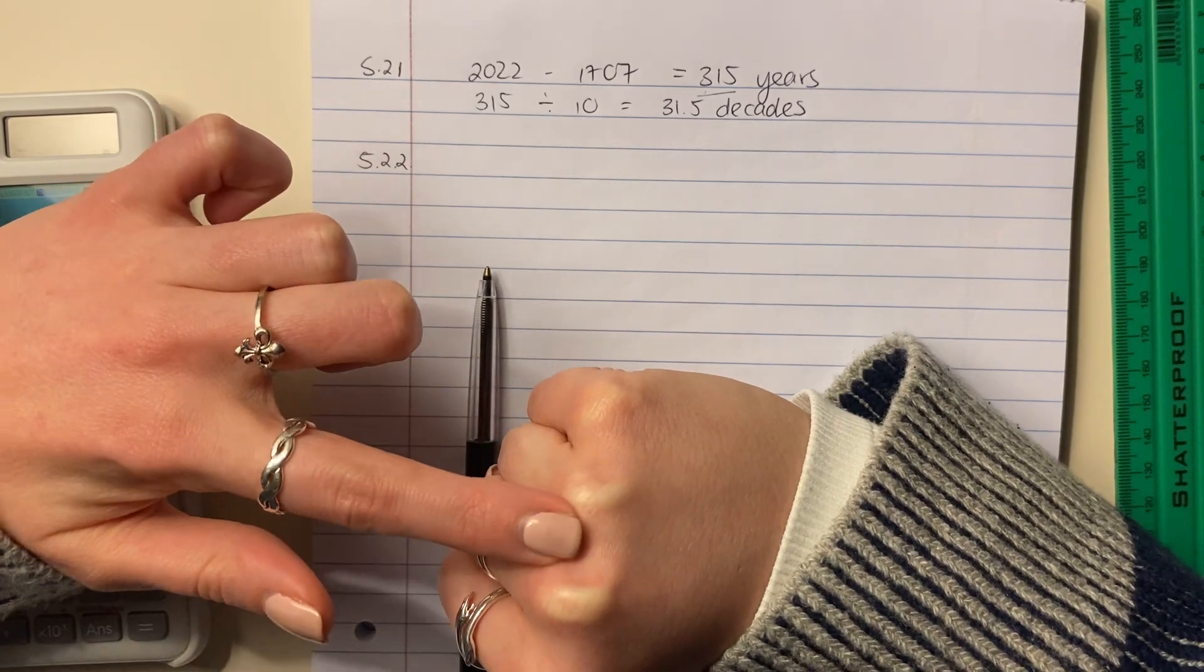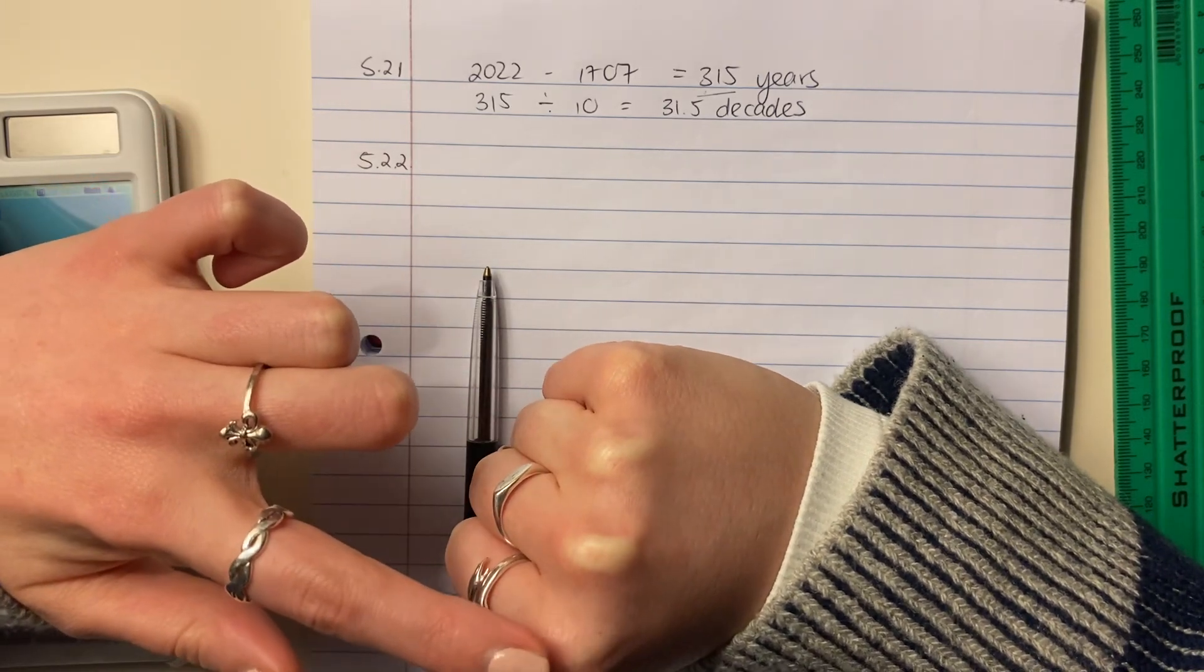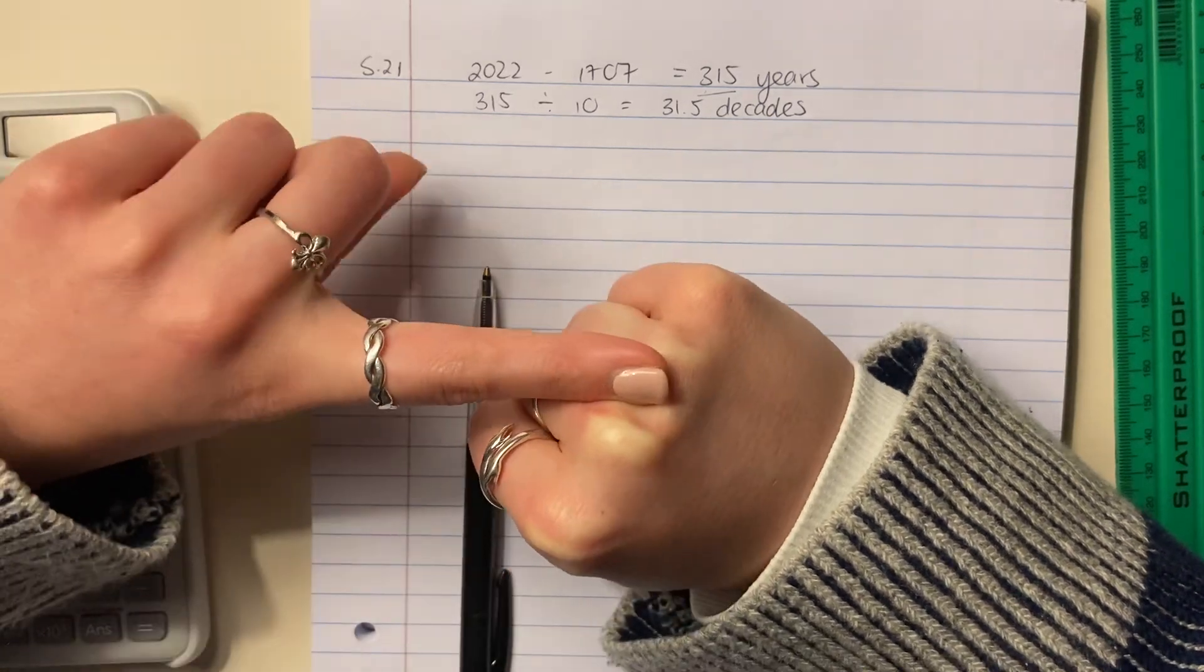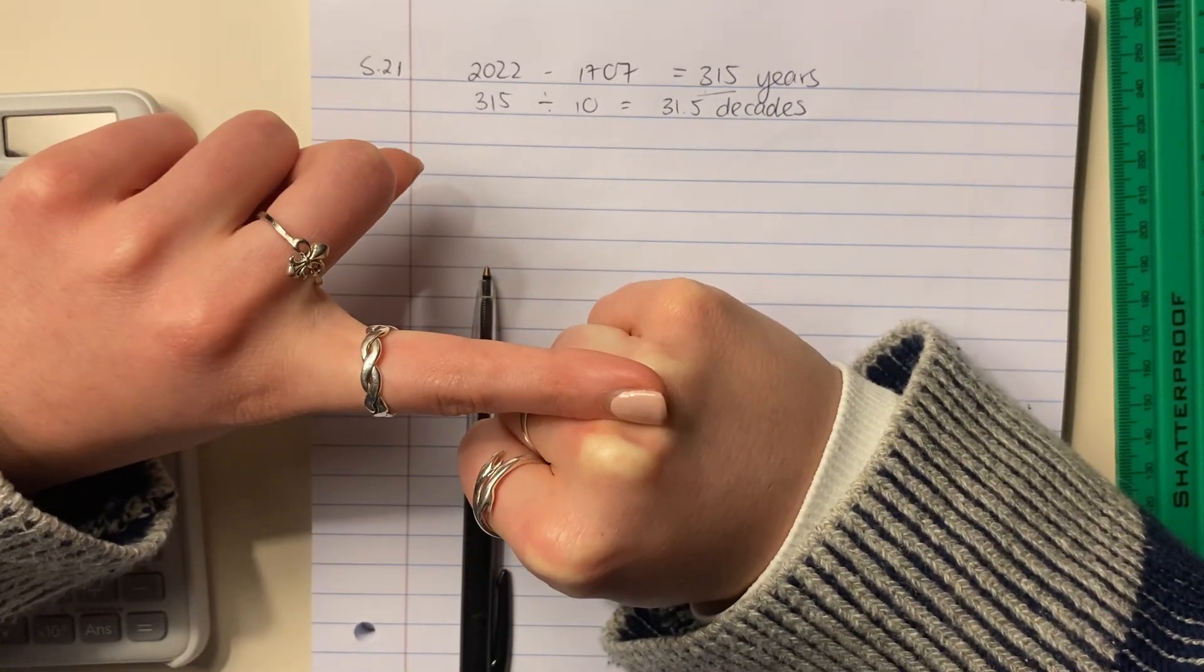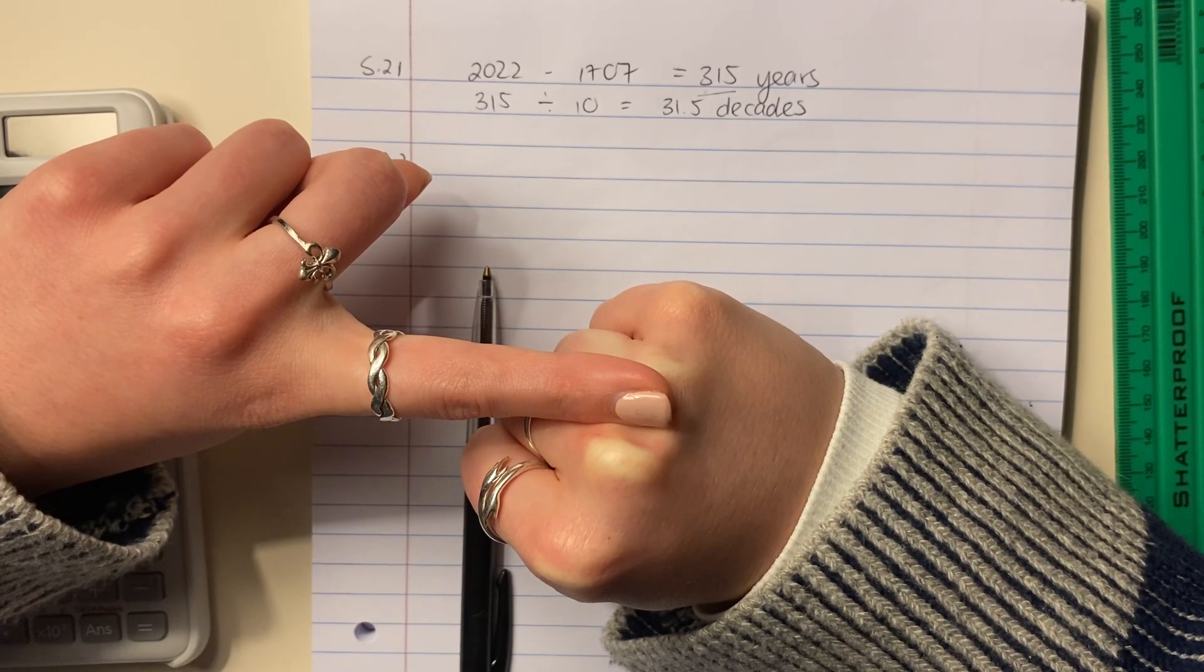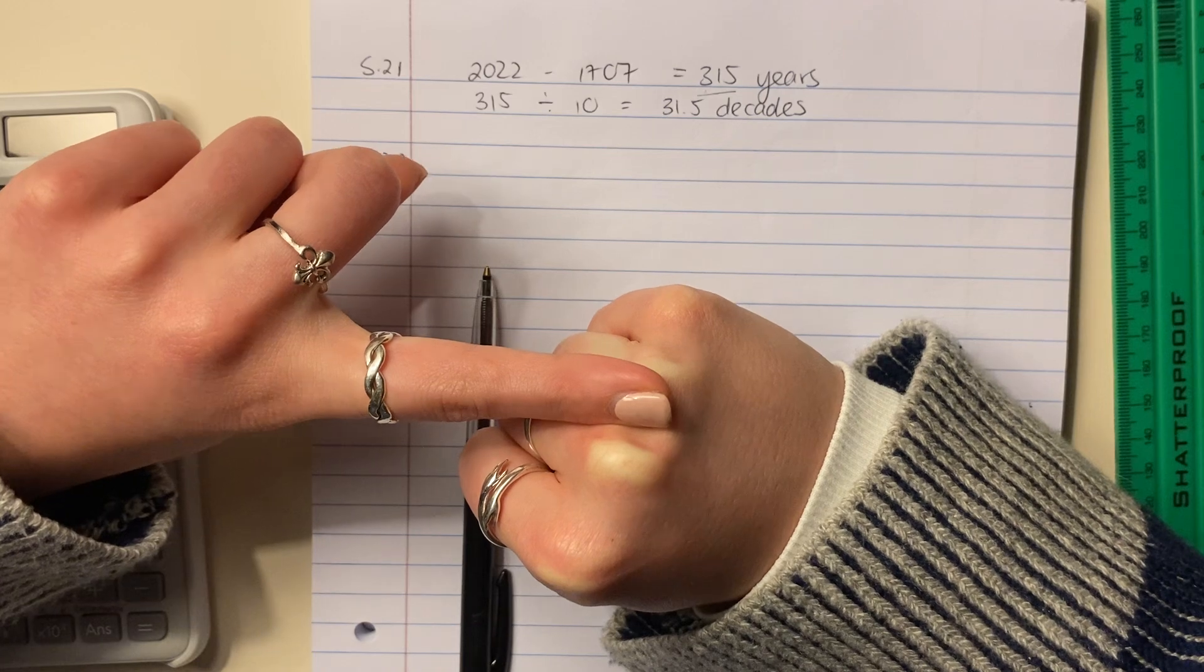January, February, March, April, May, June, July, August, September, October, November. Now, everything in between, right, the knuckles, those are months with 30 days. Obviously, February has 28 days. Everything on the knuckle is 31 days.